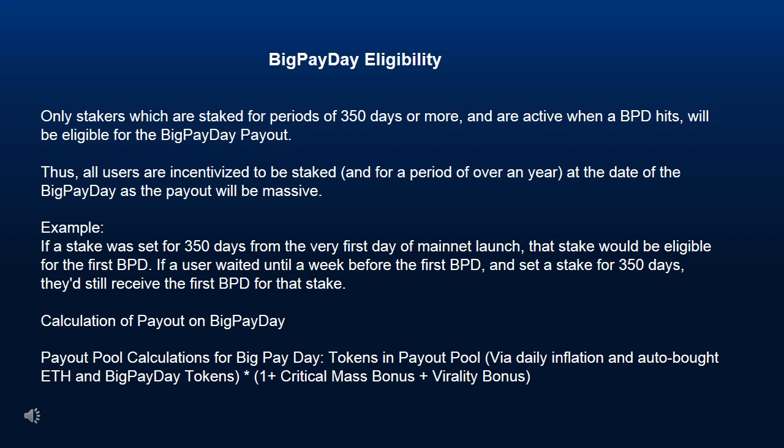Big Payday Eligibility: Only stakers who are staked for periods of 350 days or more and are active when a Big Payday hits will be eligible for the payout. All users are incentivized to be staked for a period of over a year at the date of their big payday, as the payout will be massive. For example, if a stake was set for 350 days from the very first day of mainnet launch, that stake would be eligible for the first BPD. If a user waited until a week before the first BPD and set a stake for 350 days, they'd still receive the first BPD for that stake. The payout pool calculation for big payday is: tokens in payout pool via daily inflation and auto-bought ETH and big payday tokens × (1 + critical mass bonus + virality bonus).